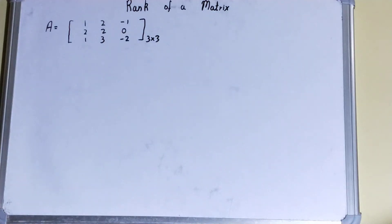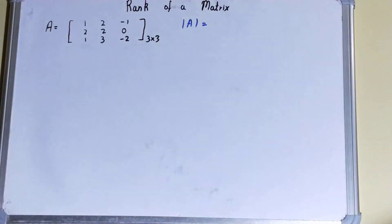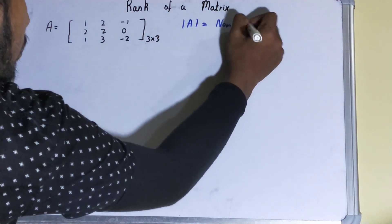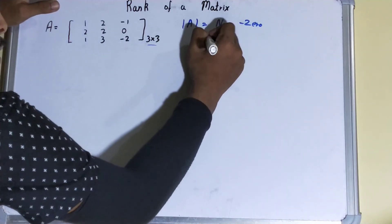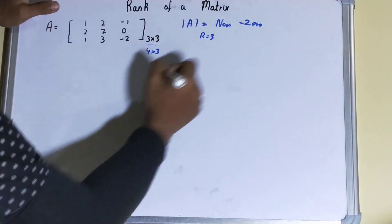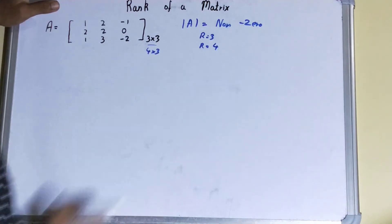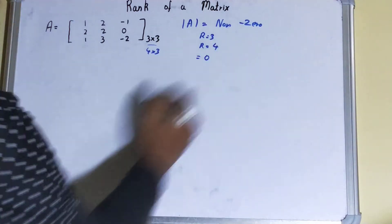The trick is: if you get a matrix — say a 3×3 — you find its determinant. If the determinant is non-zero, then the highest number of rows or columns is your rank. For a 3×3 matrix, rank will be 3. For a 4×3 matrix, the highest is 4, so rank will be 4.